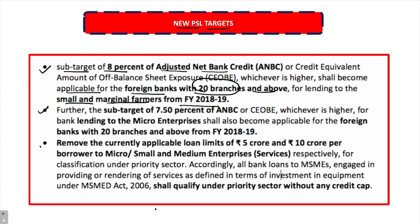Just remember these three guidelines and then we will revisit the entire priority sector lending framework. The second revision: a sub-target of 7.5% of adjusted net bank credit on lending to micro-enterprises shall also become applicable to foreign banks with 20 or more branches.